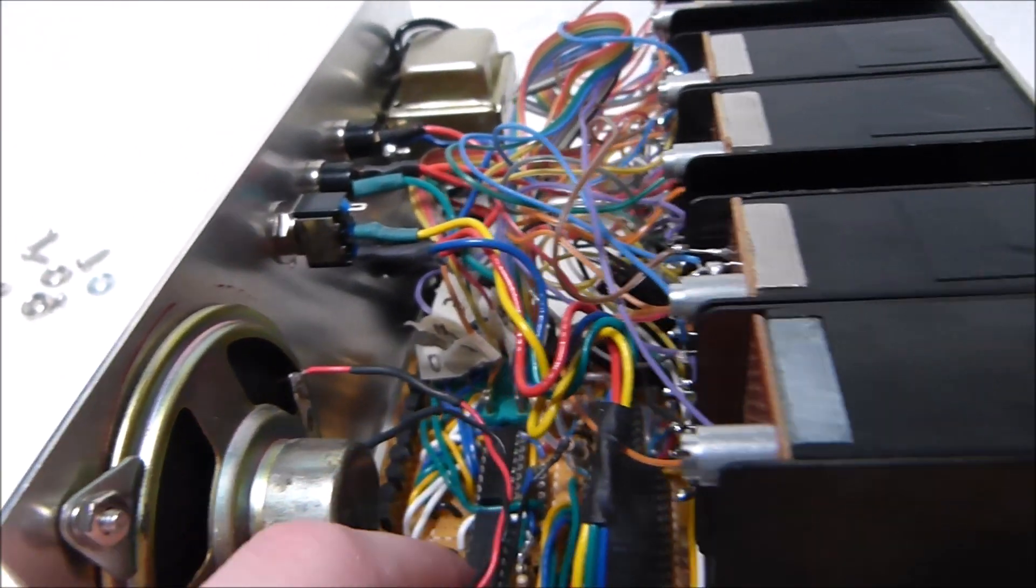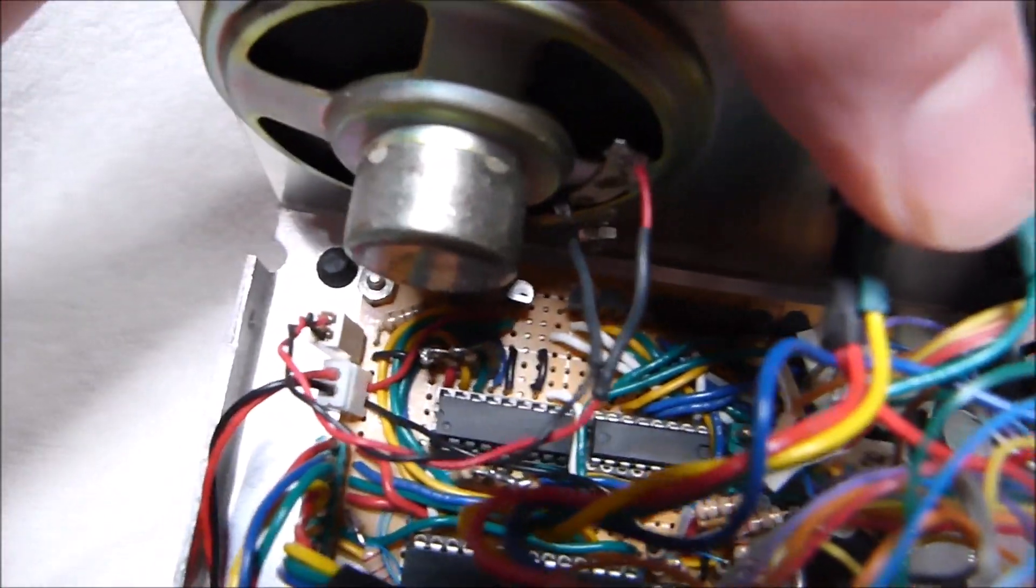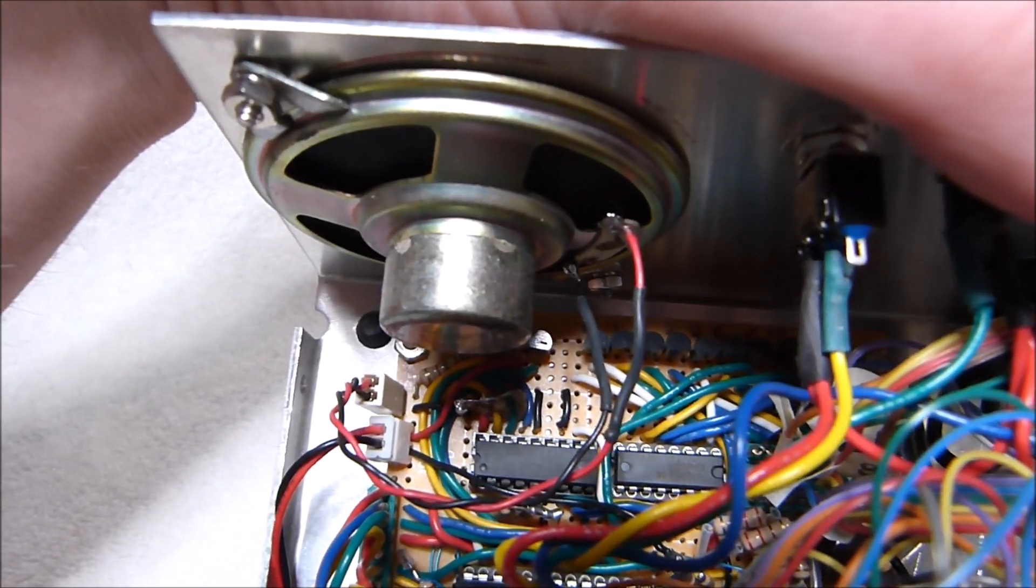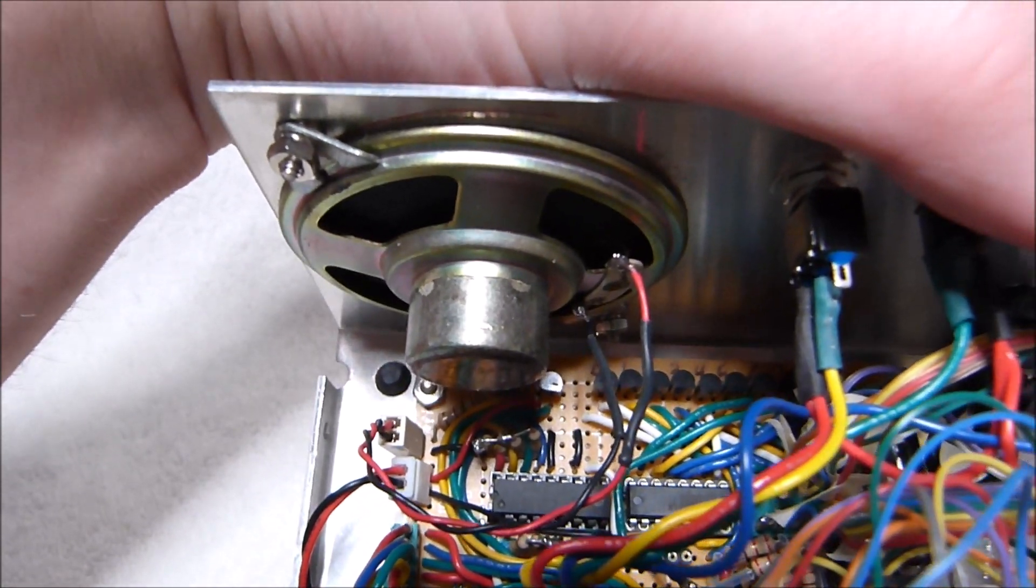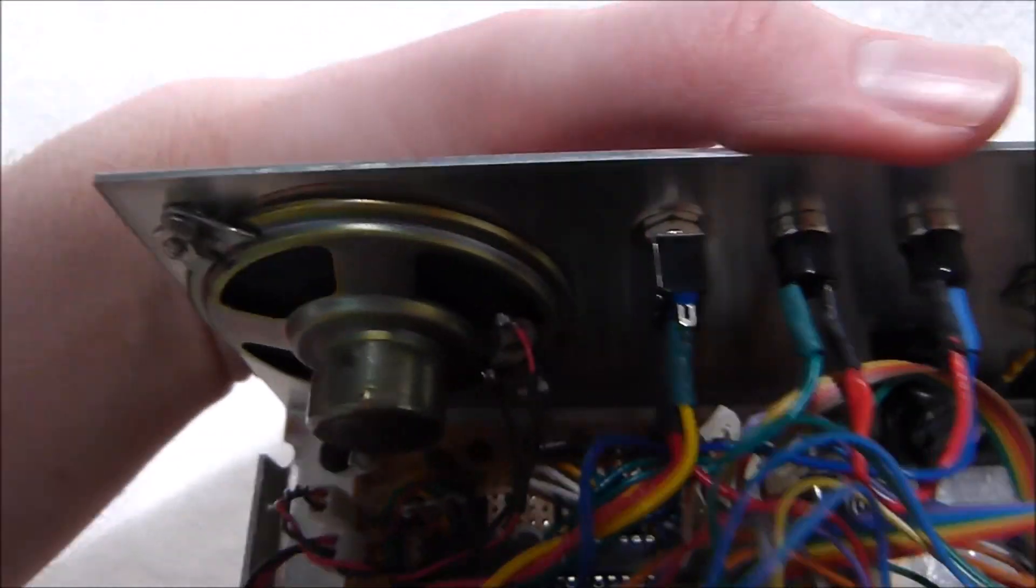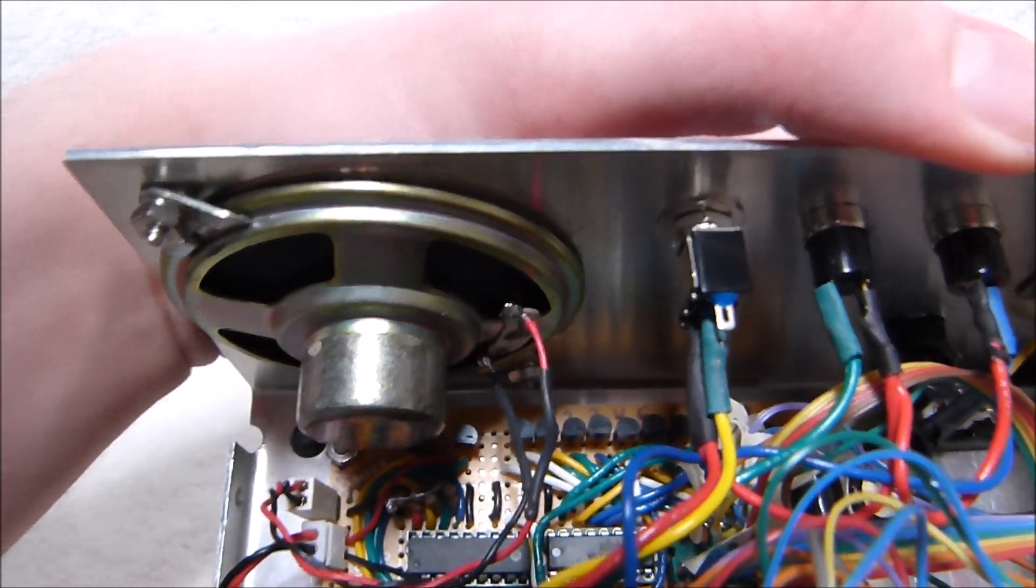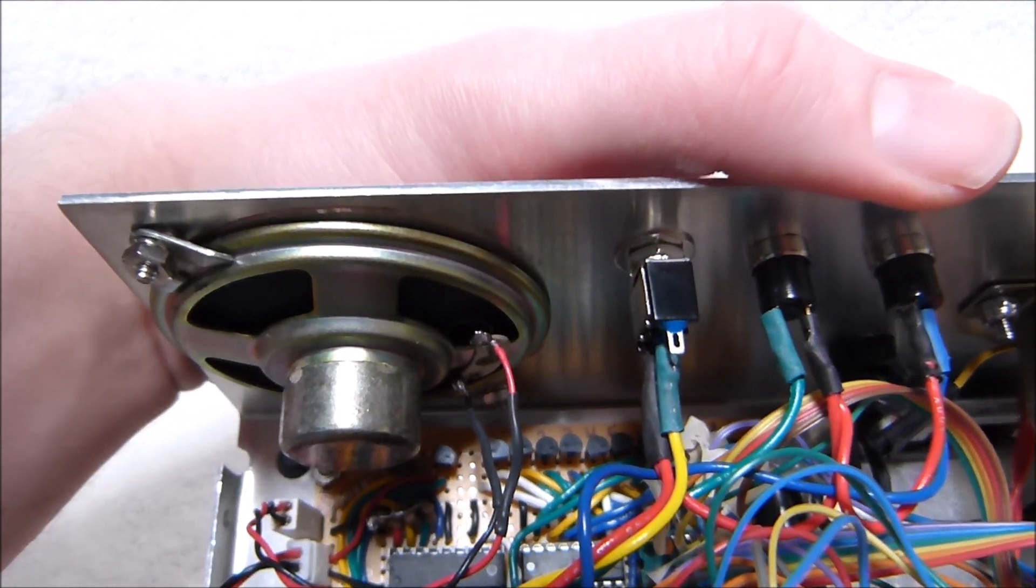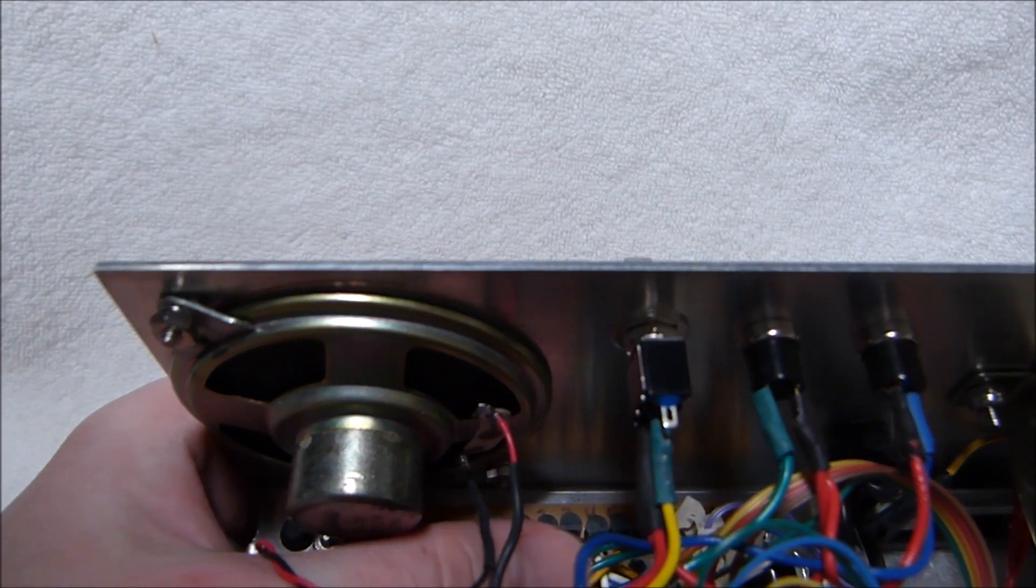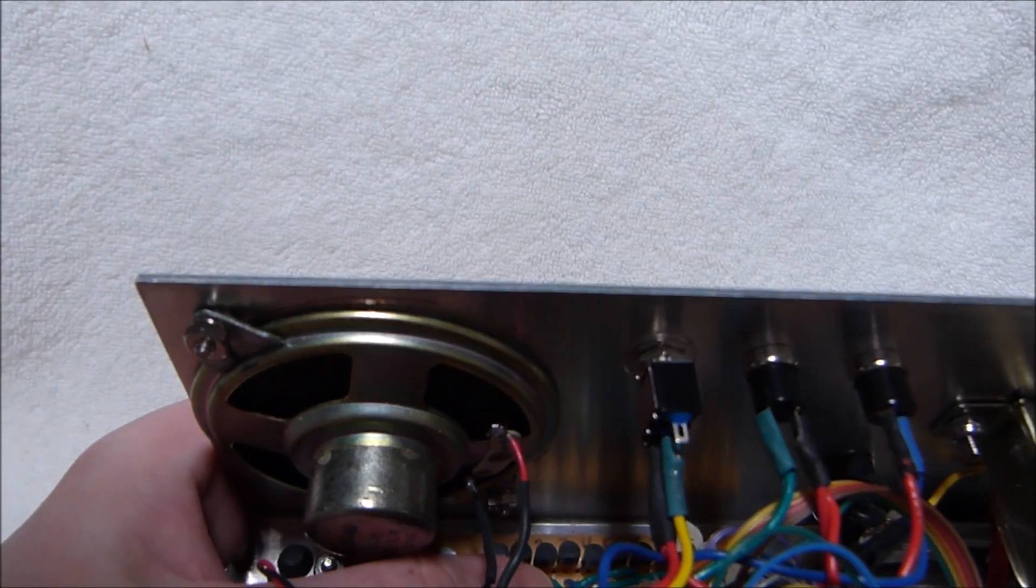To do that, I use these two chips here. The first one is this MM74C915N. That's a seven-segment to BCD translator chip. And then next to it is a CD4028. That's a BCD to decimal chip.